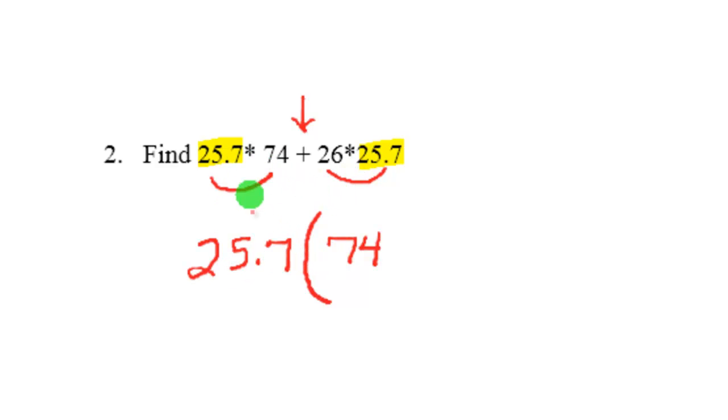We can just take it out and put a parenthesis, and since we've taken this 25.7 out, it's going to leave us a 74. Any time you put a number next to a parenthesis, that means multiplication. So we're just rewriting this in shorthand. 25.7 times 74 plus 26.